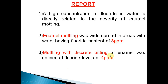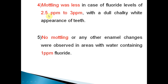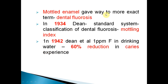Widespread mottling was found in areas with water content more than 3 ppm, with discrete pitting above 4 ppm, while mottling was less at 2.5–3 ppm and absent at around 1 ppm. These were the conclusions of the Shoe Leather Survey. As a result, 'mottled enamel' began to be called 'dental fluorosis,' since the imperfection was caused by fluoride. In 1934, Dean standardized a classification of fluorosis known as Dean's Fluorosis Index, which was modified later in 1942.